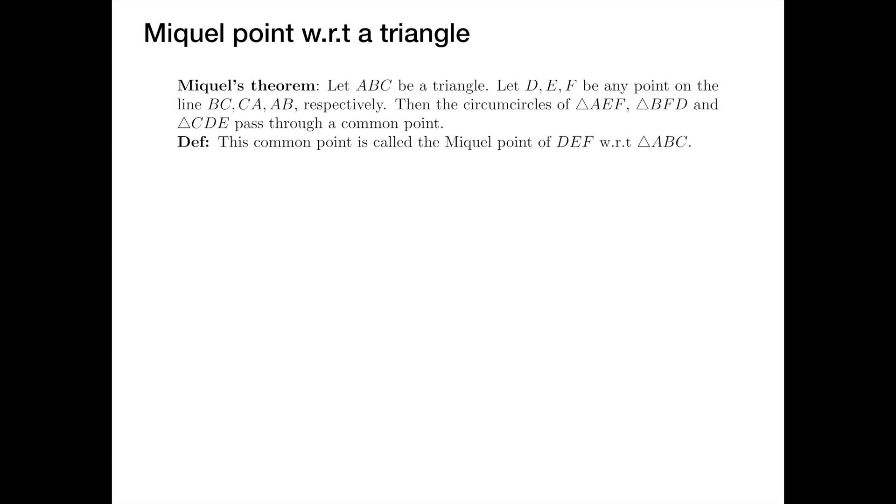Here is the Miquel theorem. Let D, E, F be any point on the line BC, CA and AB. The claim is that the circumcircle of AEF, BFD and CDE pass through a common point. And this common point is called the Miquel point of D, E, F with respect to the triangle ABC. I want to emphasize that the theorem still holds when the points D, E and F lie outside the triangle, as shown in the Bino figure.